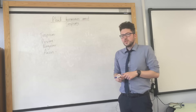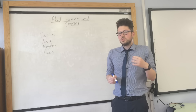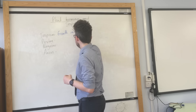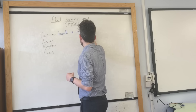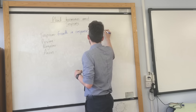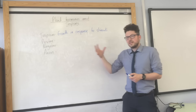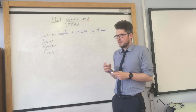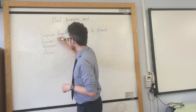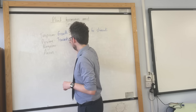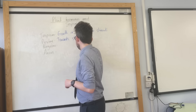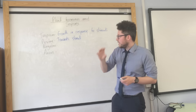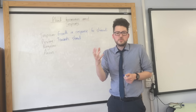The first definition we're going to look at is tropism. Tropism is a directional growth in response to stimuli. For example, a plant growing in response to water or light is known as a tropism. If it's positive, it means it's towards the stimuli. So a plant shoot growing towards a light would be a positive phototropism — photo just means light.